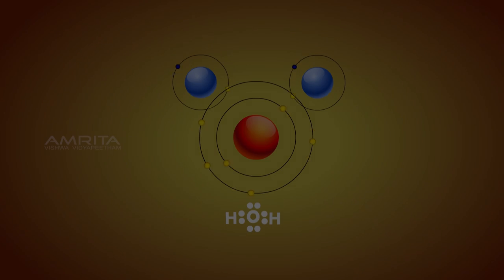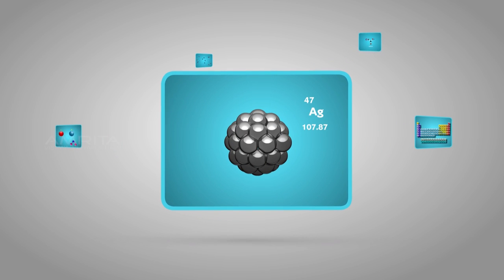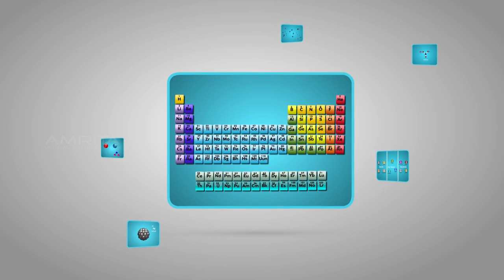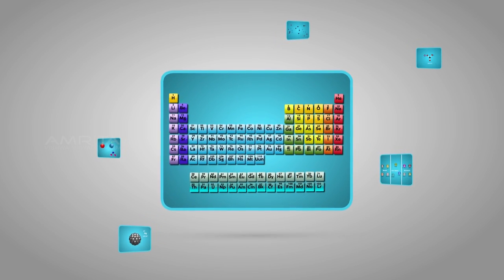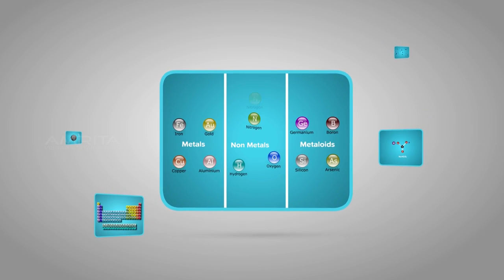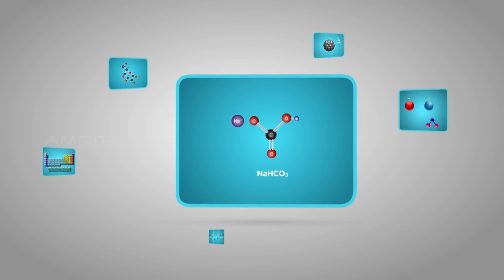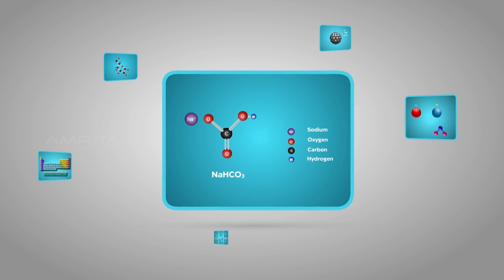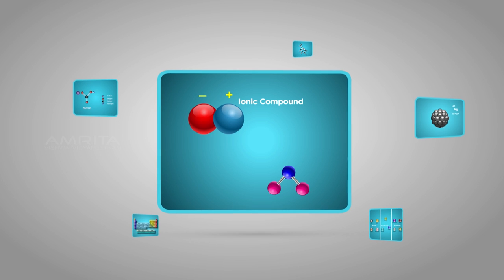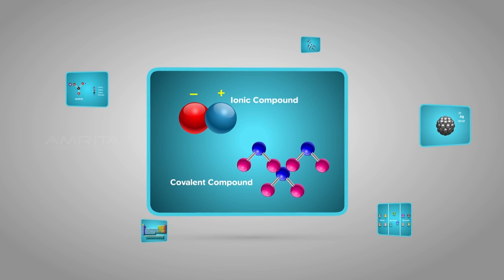Things to remember: Elements are the simplest form of matter and are made up of atoms of the same kind. In the periodic table, elements are arranged in the order of increasing atomic number. Elements can be classified into metals, non-metals, and metalloids. Compounds are pure substances composed of two or more different elements. The properties of a compound are different from that of its component elements. Ionic compounds are formed by the electrostatic force of attraction between oppositely charged ions, and covalent compounds are formed by the sharing of electrons between atoms.